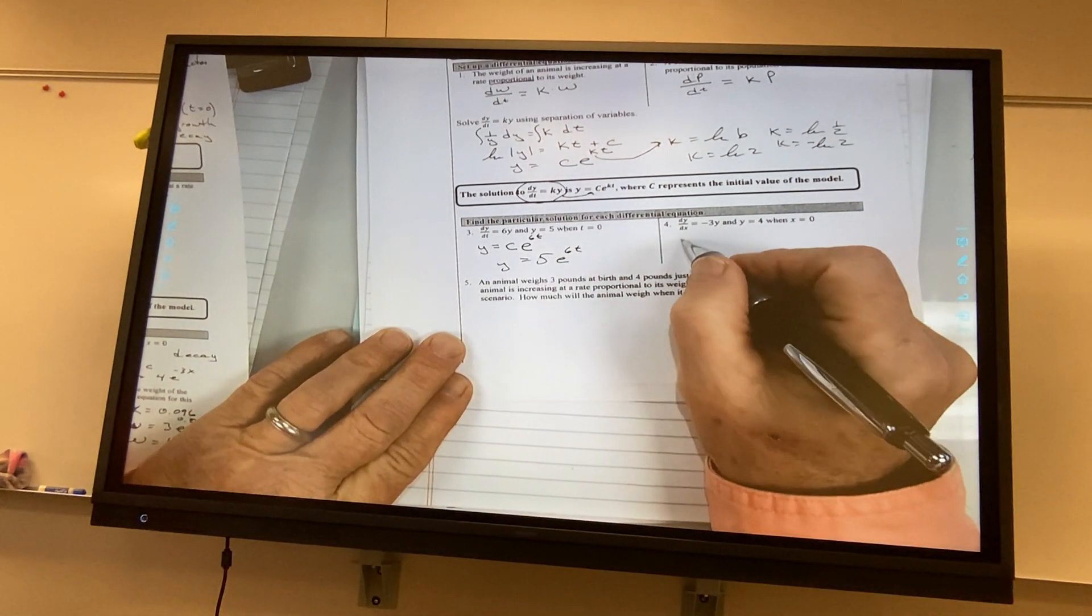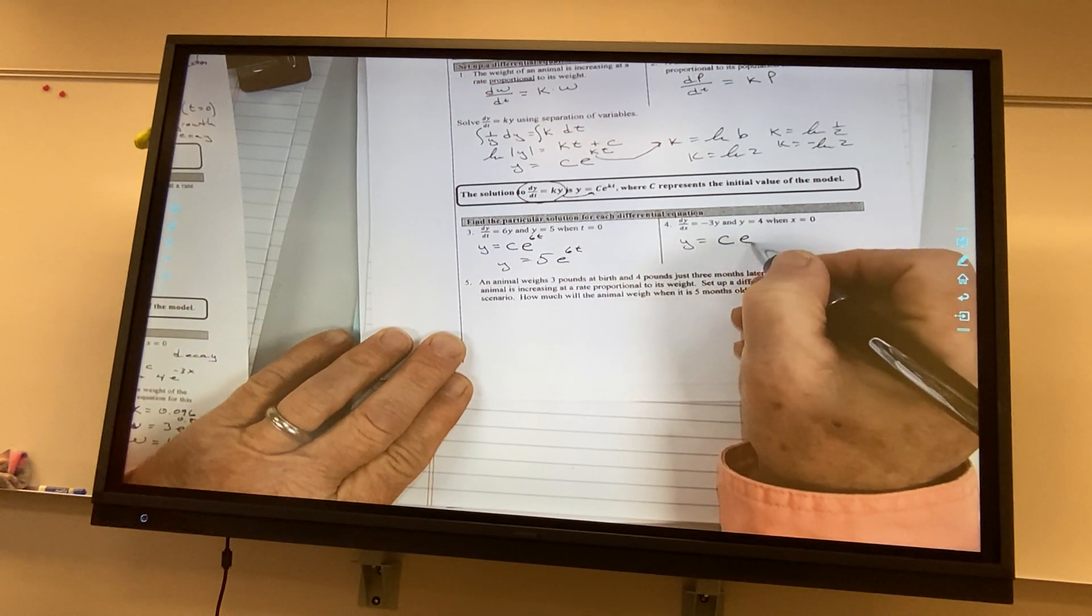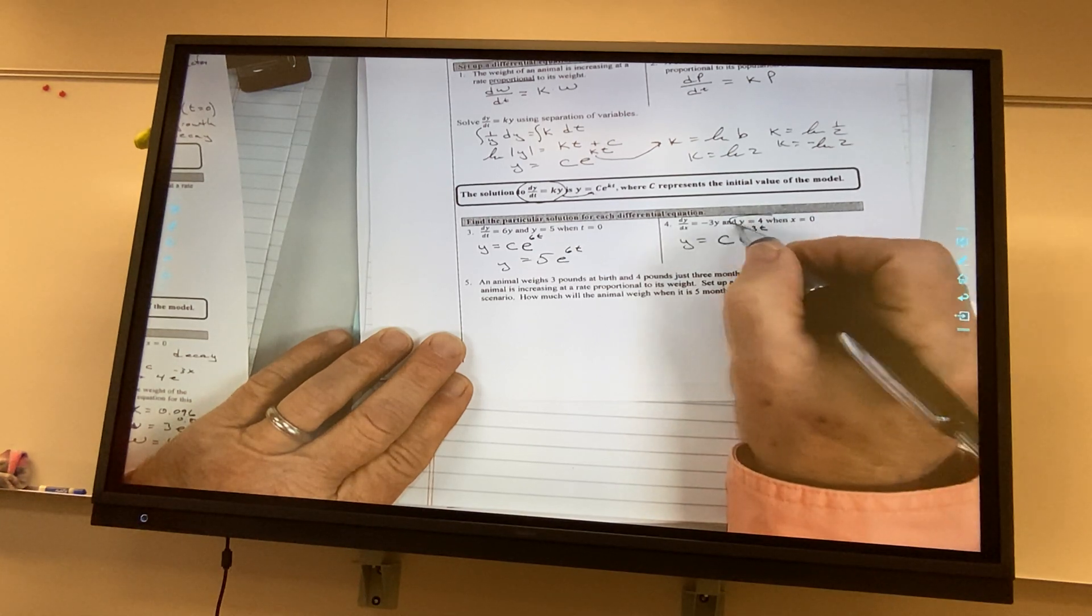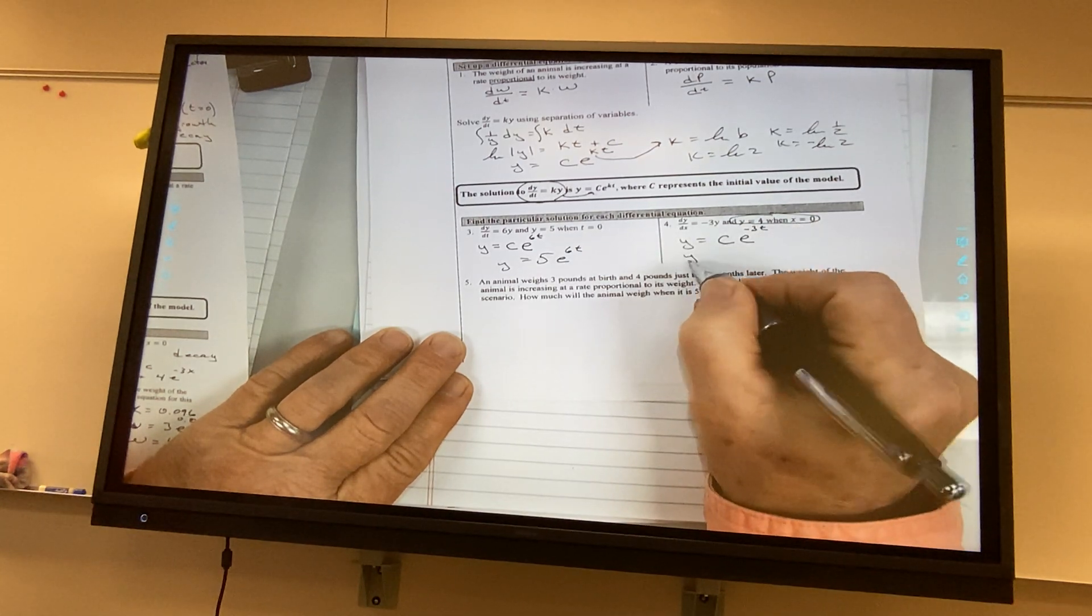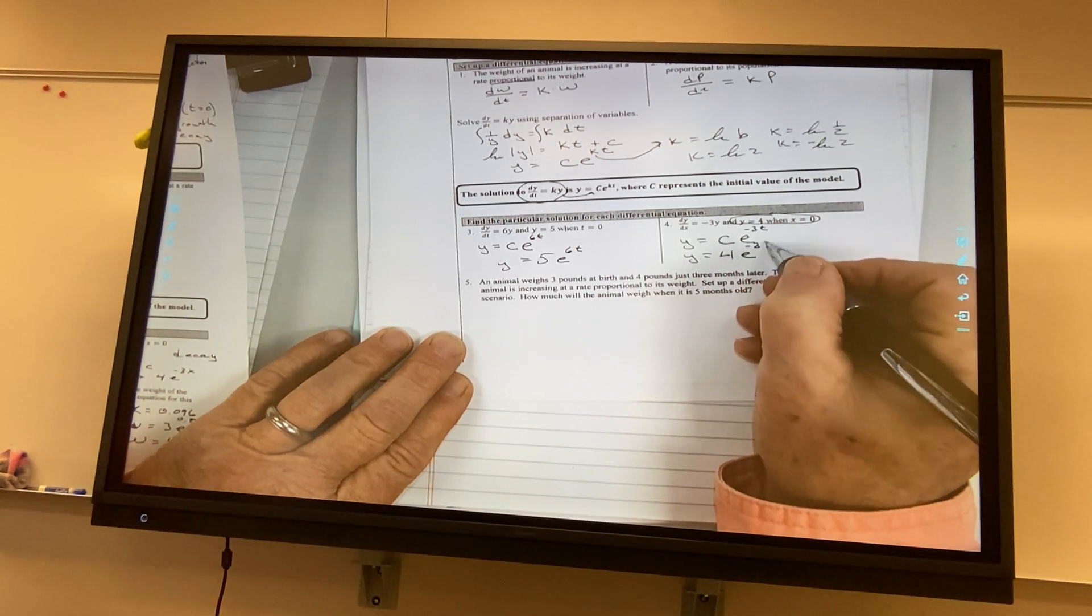This is going to be y is equal to 6, excuse me, c e to the negative 3t power. But I'm told this initial condition, so I know c. It is 4e to the negative 3t power.